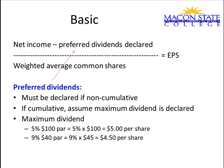For basic earnings per share, the numerator is net income minus preferred dividends declared over the weighted average common shares. Those preferred dividends must be declared if the dividends are non-cumulative. So if you have preferred dividends but nothing's been declared, there is nothing to remove from net income. If the preferred dividends are cumulative, however,